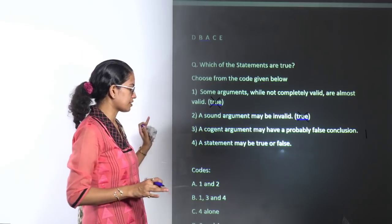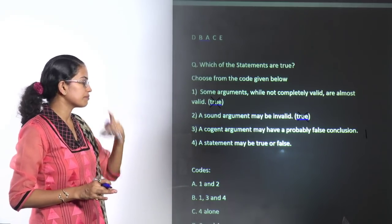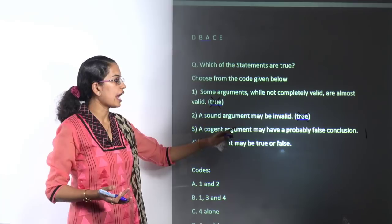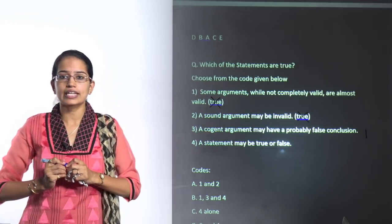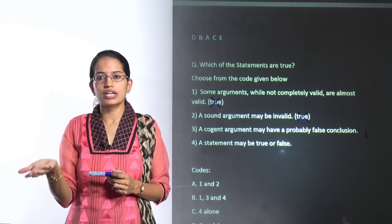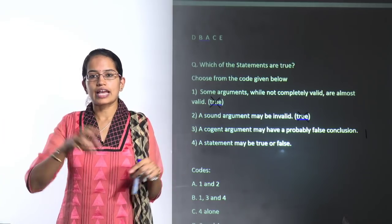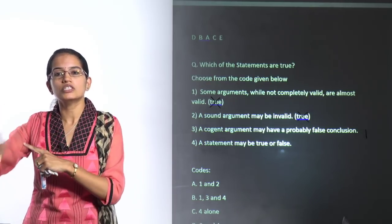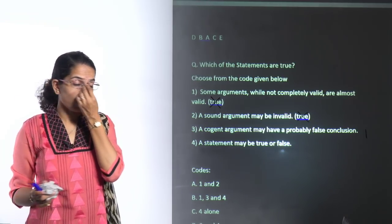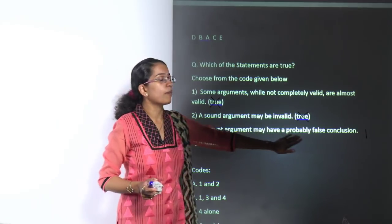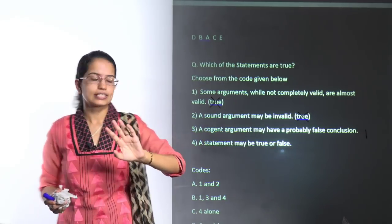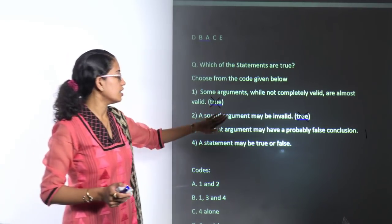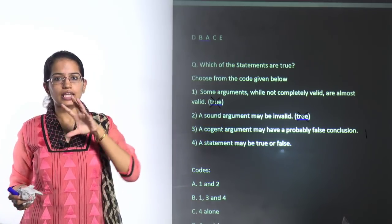The two correct statements are: a statement can be true or false — that's correct; and a cogent argument may have a possibly false conclusion — that's also correct. In our class we discussed how, if 90 of 100 balls are red, there's a high probability the 91st is red, but it could be another color. Sound arguments, however, must be both valid and true.